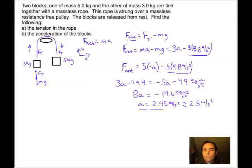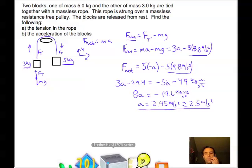So what's going to happen here is both of these blocks are going to accelerate at this rate. One is going up. This three kilogram one is going up. And this five kilogram one is going down, accelerating at this rate, 2.45 meters per second squared.